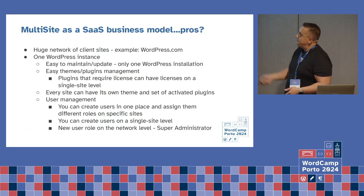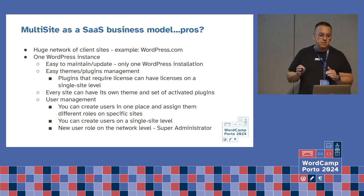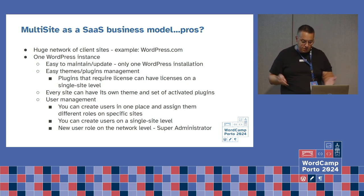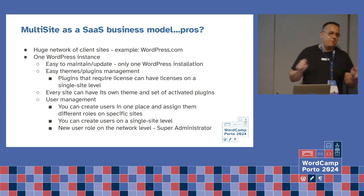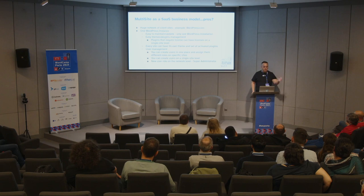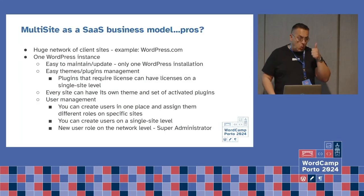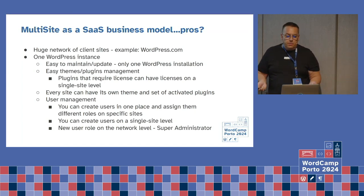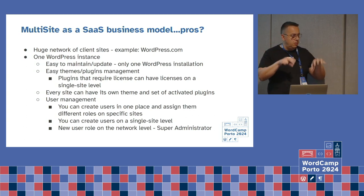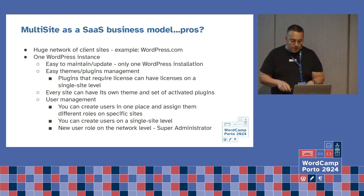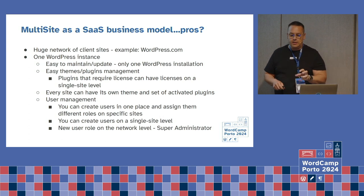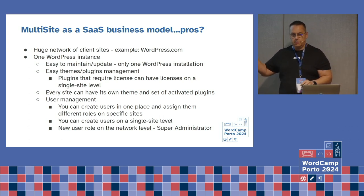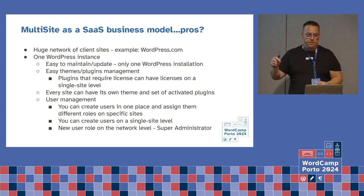So what are the pros? Huge network — you can create pretty big networks. Do you know what is maybe the biggest multisite network on the internet? WordPress.com. Yes. WordPress.com is one of the biggest. Also, wordcamp.org — every WordCamp has its own subdomain. Porto has a subdomain, Vienna has its subdomain, and so on. So you have one WordPress instance, only one, and it's easy to maintain. Also, themes and plugins — you install them in one place, not on every site. Plugins that require licenses — pro plugins — if they support multisite, you can create a license for every specific website. So every site in the network can have a separate license.